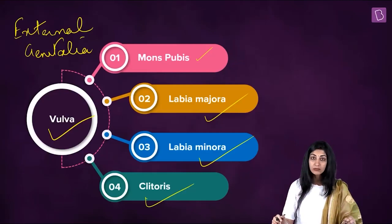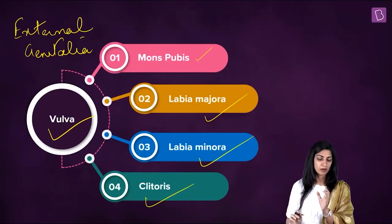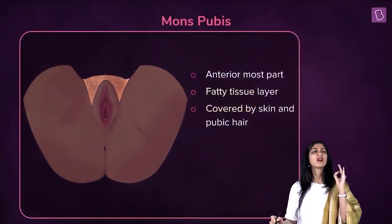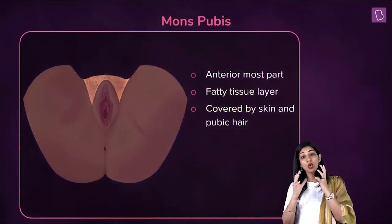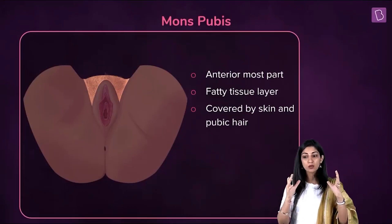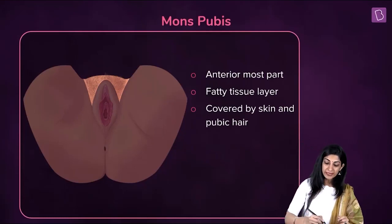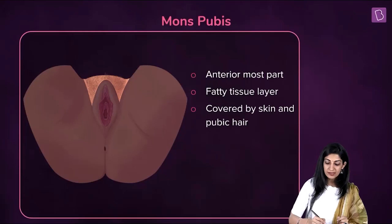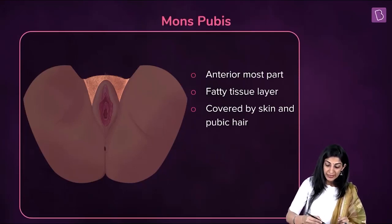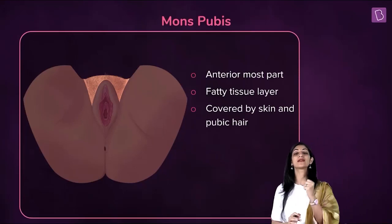So vulva consists of these four parts. Vulva is situated around the vaginal orifice — in the midline of the vulva, as you can see in this diagram of the pelvic cavity, are the vaginal orifice and the urethral orifice.